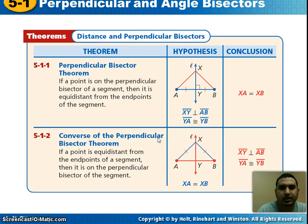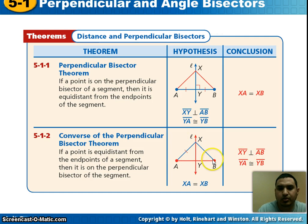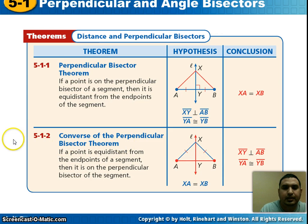On the opposite side of that, the Converse of the Perpendicular Bisector Theorem: if a point is equidistant from the endpoints of a segment — in other words, if you know that the distance from X to A equals the distance from X to B — then your conclusion would say that XY makes a 90-degree angle, and you also know that the distance from Y to A is equal to the distance from Y to B. That's the converse of the perpendicular bisector theorem.